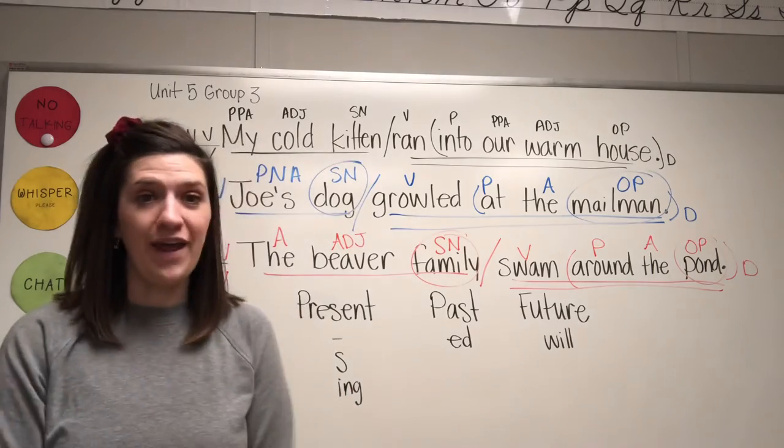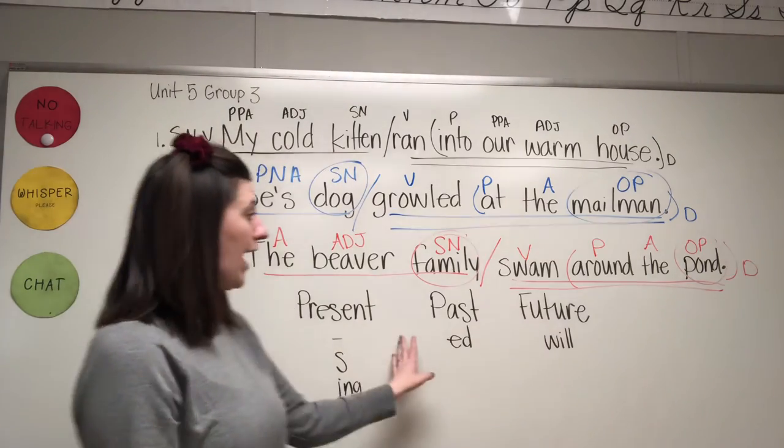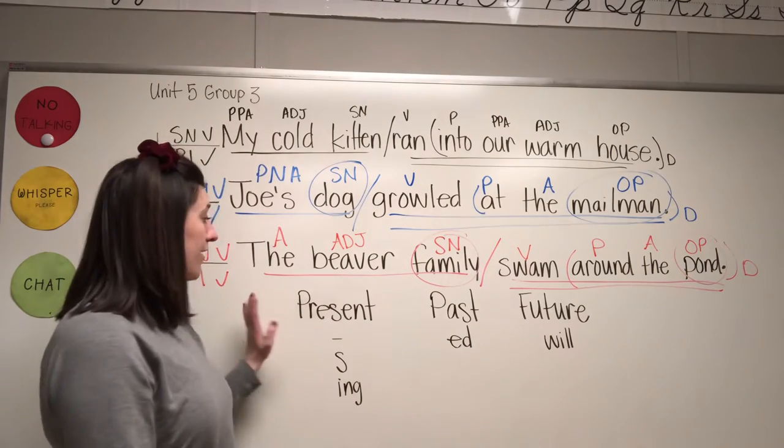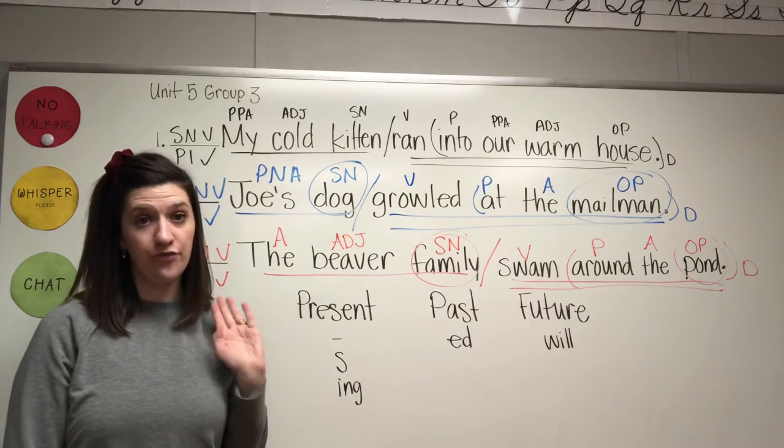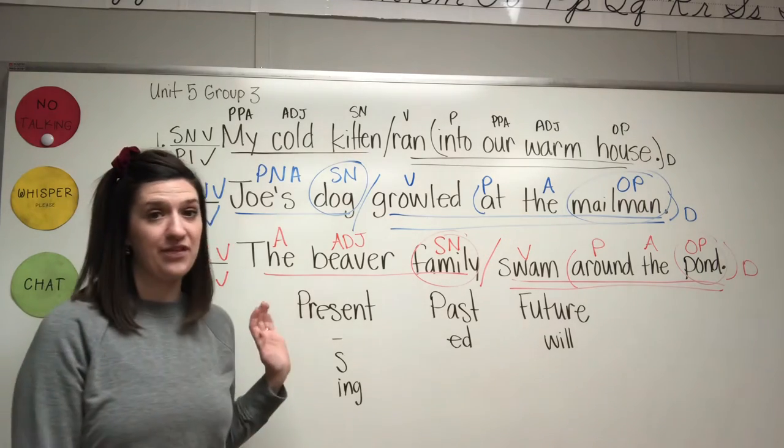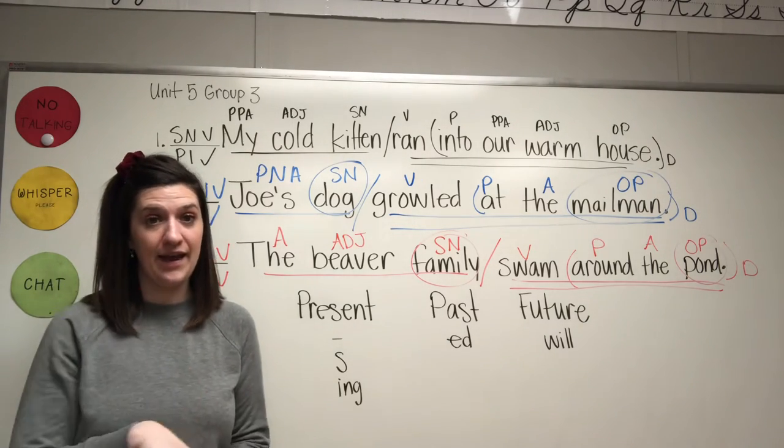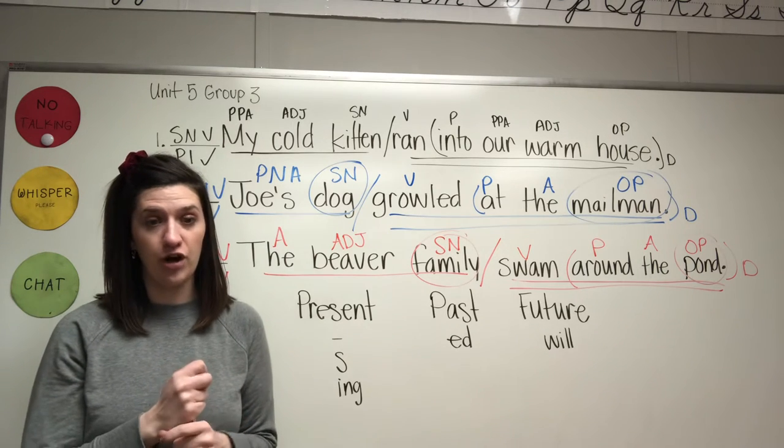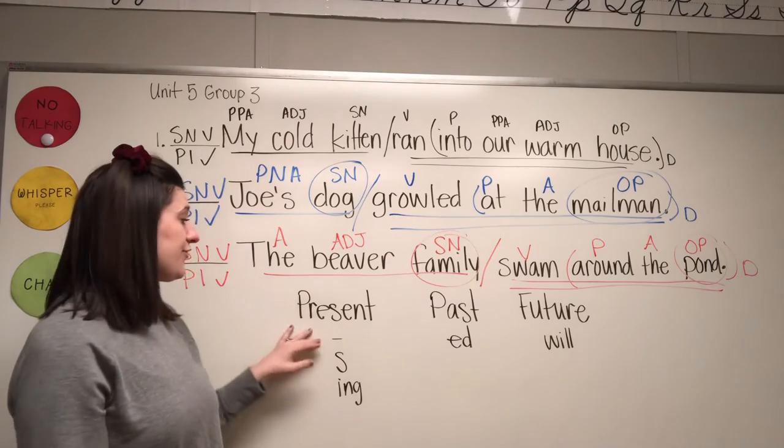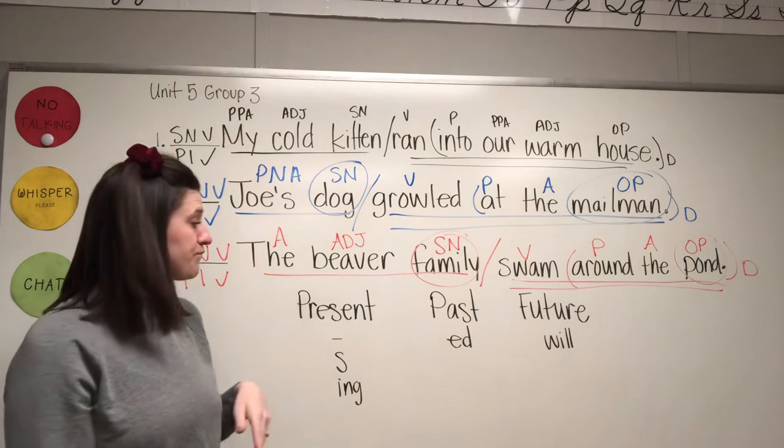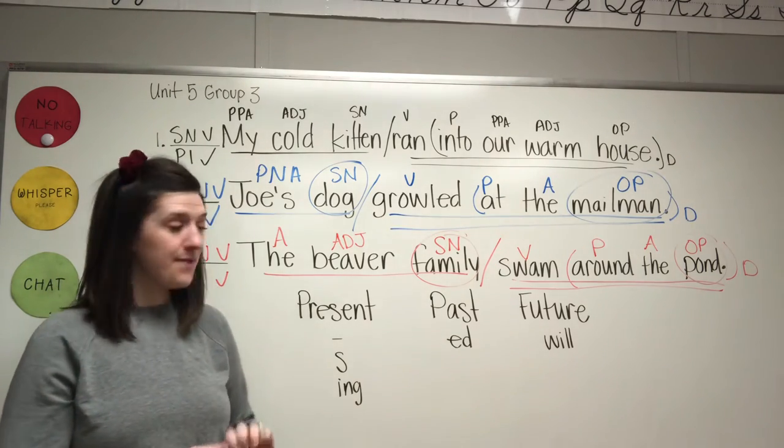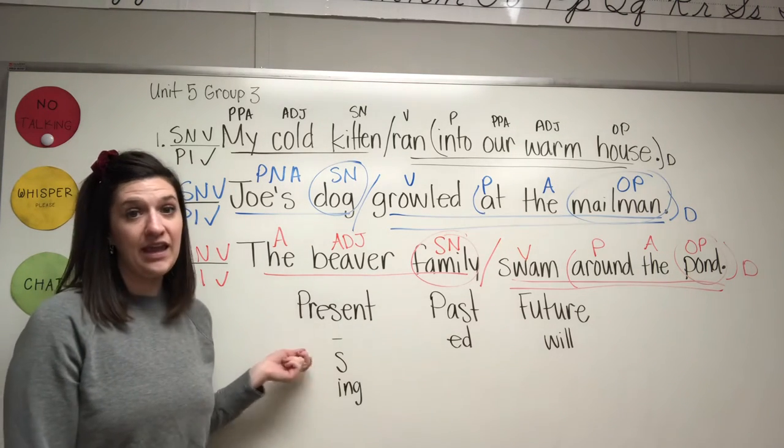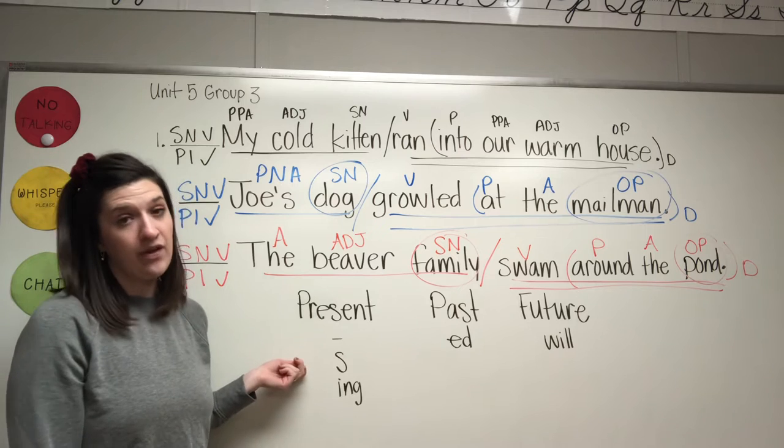Just a really quick review of present, past, and future tenses. If you have your action word, your verb is happening in the present, that means it's happening right now. And some tips for knowing whether or not your verb and your action is happening in the present is if your verb has no ending, like the word play. I play outside.